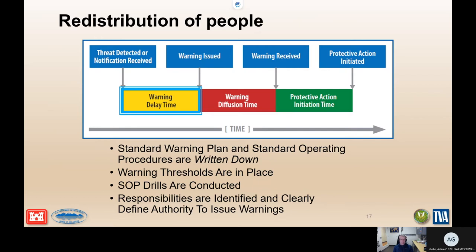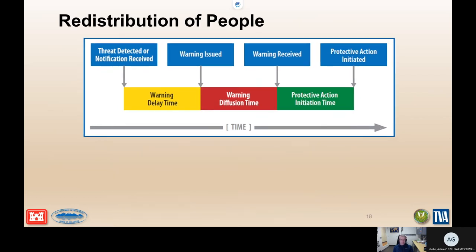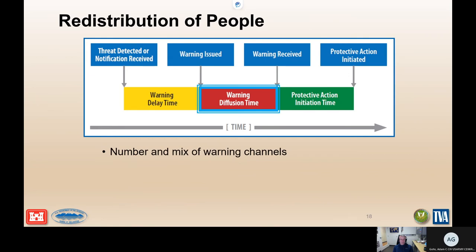That warning threshold aspect means you've spent time looking back and saying: here's the potential issue we might see, here's what it means in terms of flood threat, and here's what we should be telling the population. If you can carry that through to what you're going to tell the population, then you don't have to think about it very much in the moment. For warning diffusion time, the factors that really drive it are the mix of warning channels available. Most populations are a mix of different types of people — you can't just rely on reverse 9-1-1 or just a mobile phone alert system; you need multiple channels.